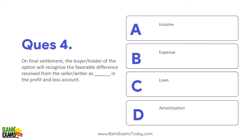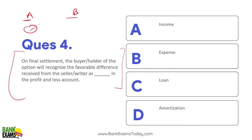Question 4: On final settlement, the buyer/holder of the option will recognize the favorable difference received from the seller/writer as income in the profit and loss account. When the contract expires — say A and B have a contract — if A predicted the market would go up and bought a call option and made a profit, that favorable difference is shown as income.